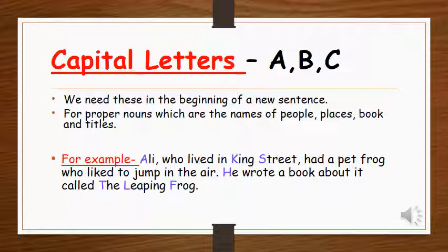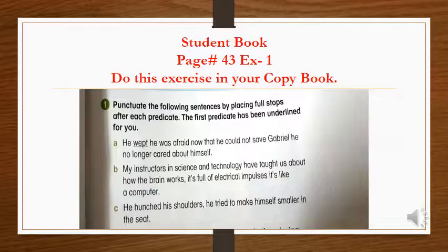Now you can see in these three lines that Ali, which is the name of a boy, the first letter is written capital. King's Tread, it is the name of the street, so the letters are in capital. He, the H is written in capital Y, because this is the beginning of a new sentence. The Leaping Frog, they all are written with capital letters. Why? Because this is the name of the book.